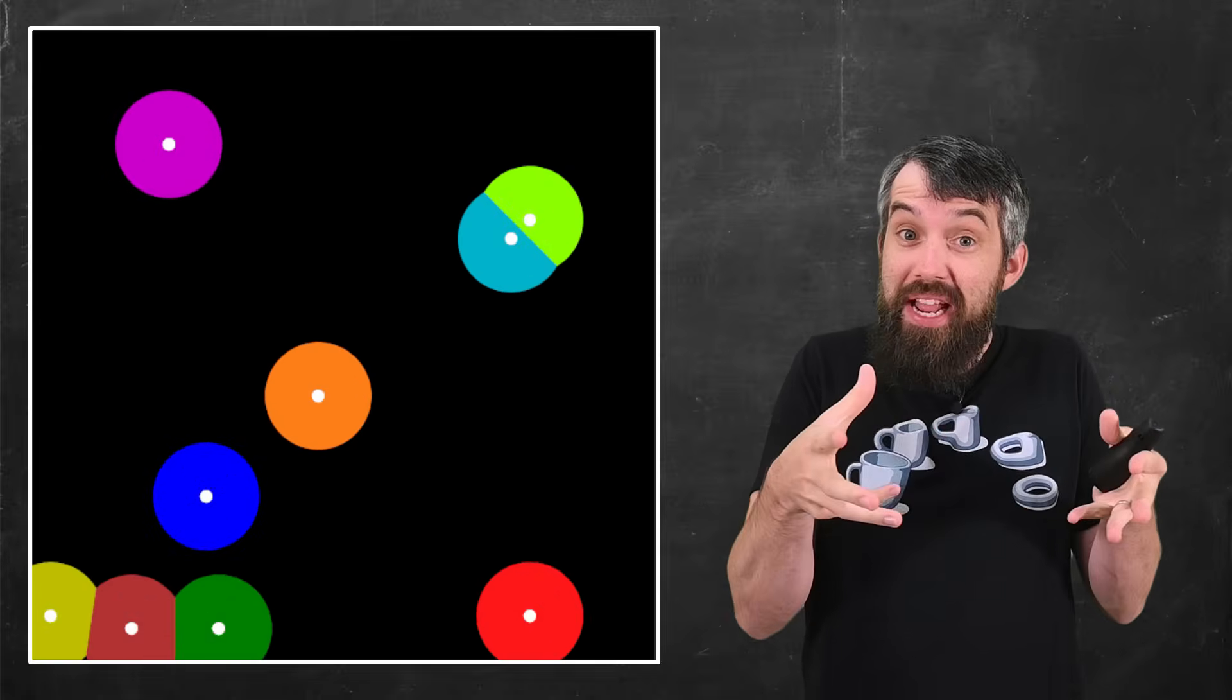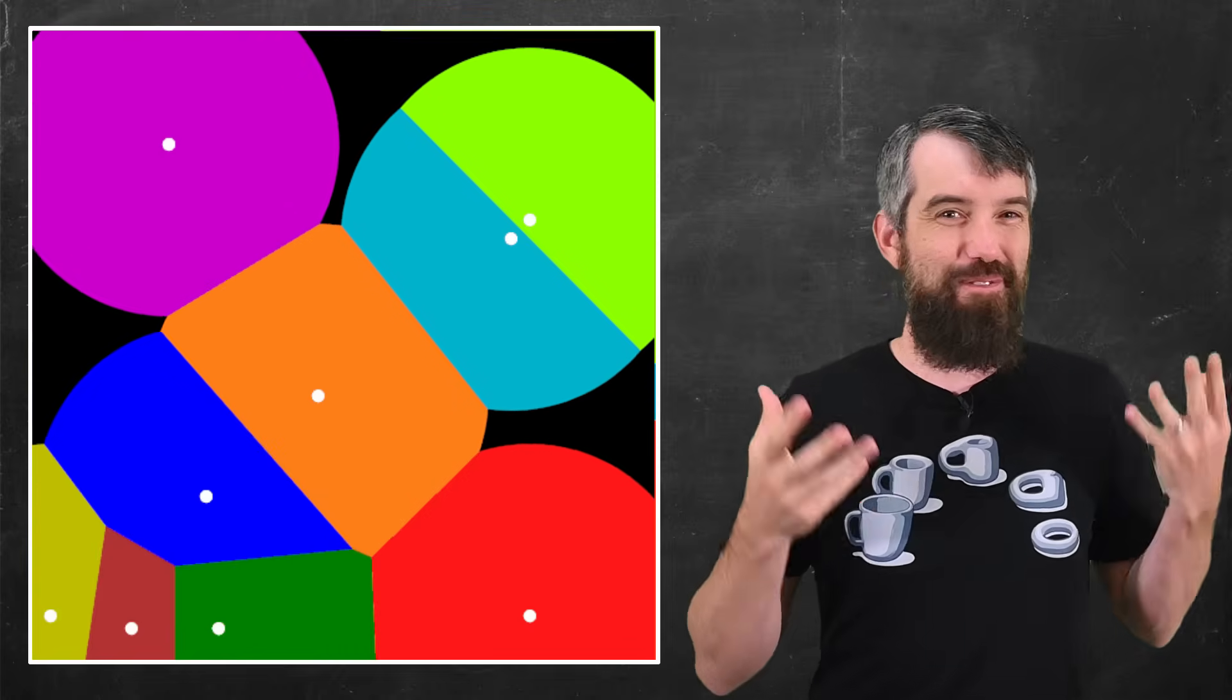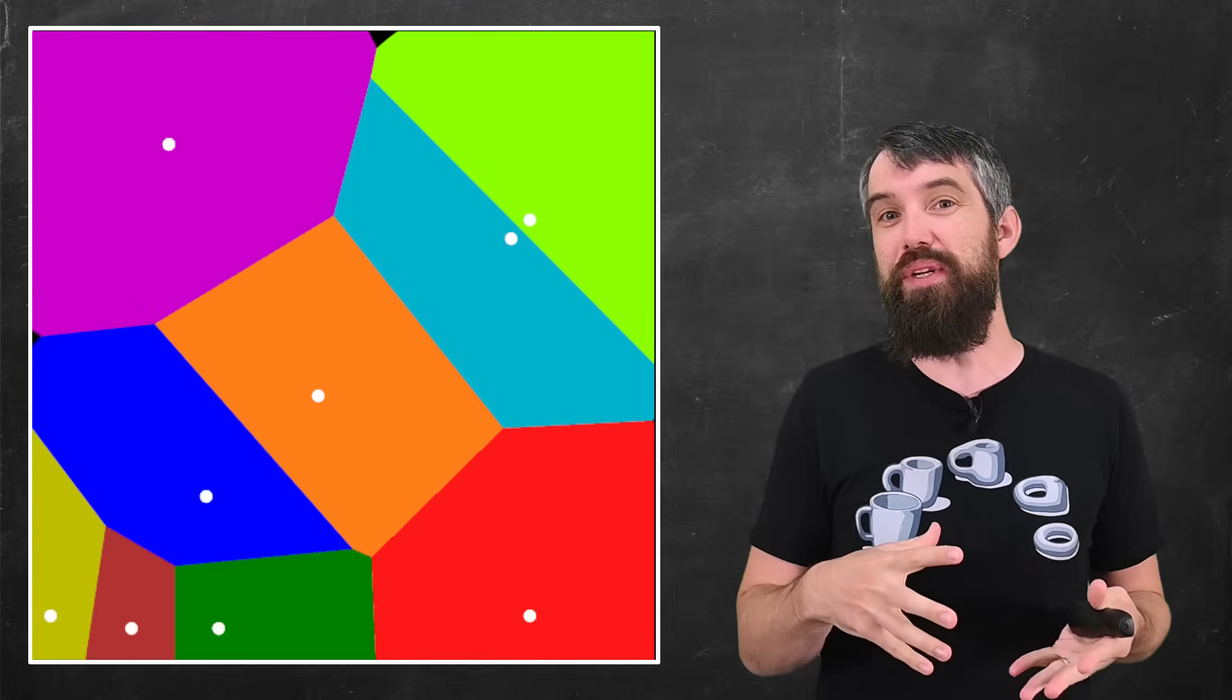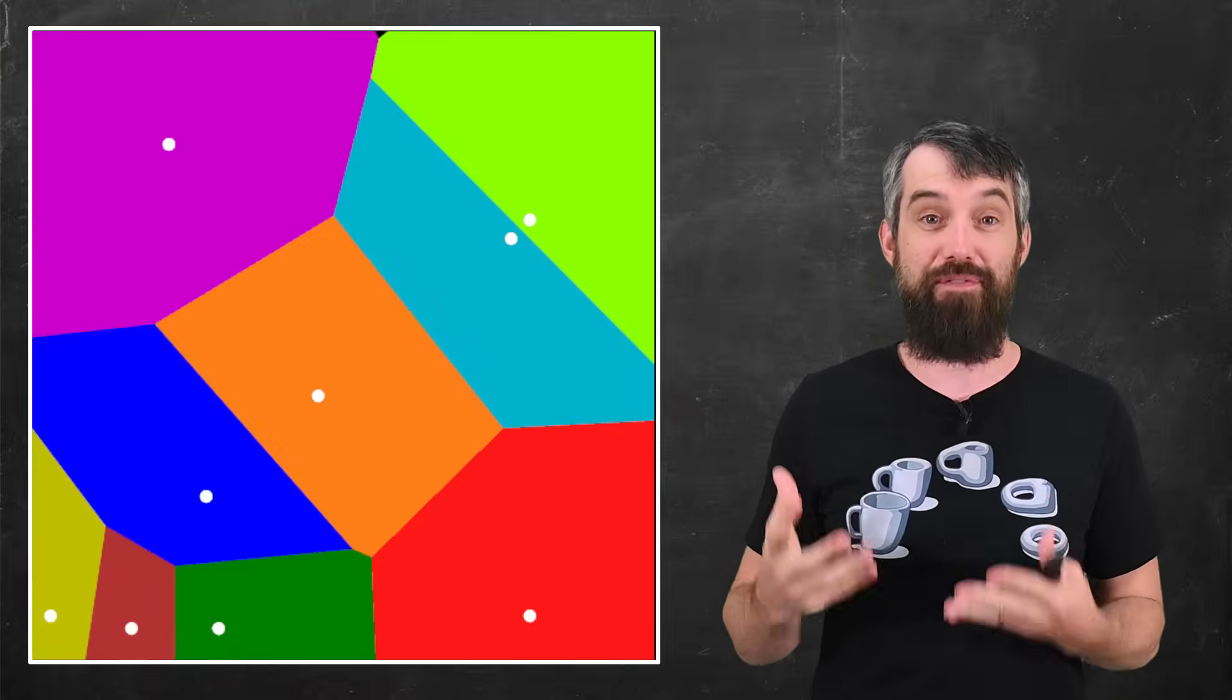The crystallization spreads out from any individual seed, but there's only finite space. And so they bump into each other and what you get is these Voronoi cells in the final result.